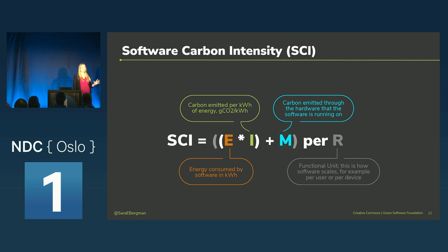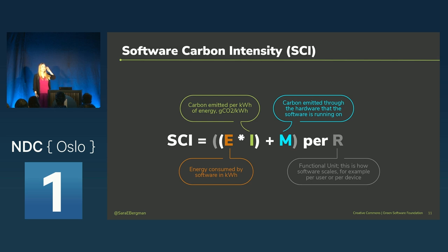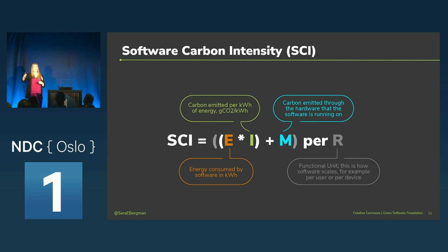The SCI is not a total of carbon emissions — it's a rate. It consists of the energy that your software consumes, multiplied by the location-based intensity of the grid (no market-based reductions are allowed here), and then you add on the embodied carbon cost. What makes this a rate is that you divide this by a functional unit of your choice, called R in the formula. This could be anything that describes how your application scales: per user, per device, per API call — anything that makes sense to you. The beauty of this is it can be used in any stage of software development, and it's heavily biased towards action. Measure it, change something, measure again, and see if it improved or got worse — then step-by-step decrease your carbon emissions.